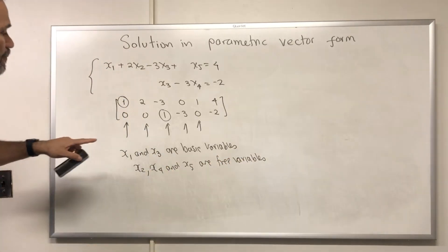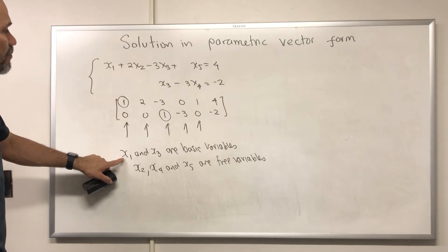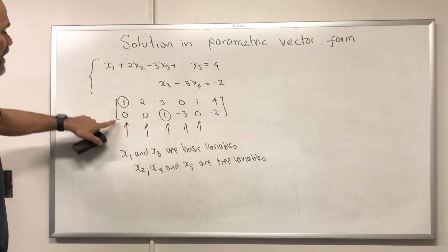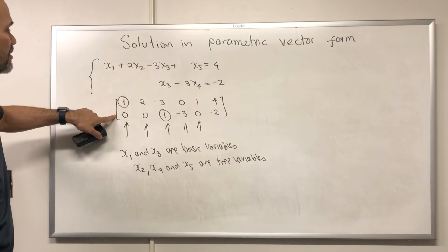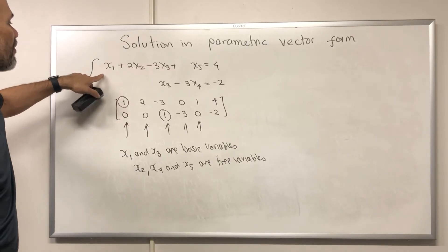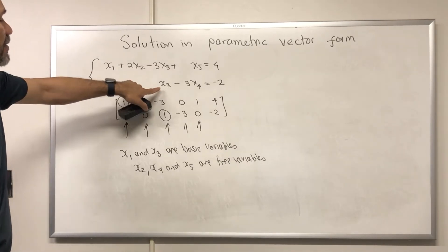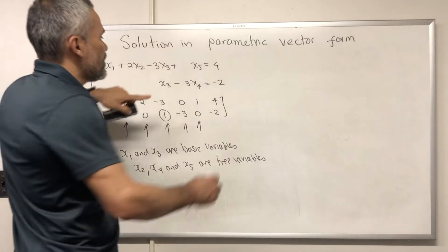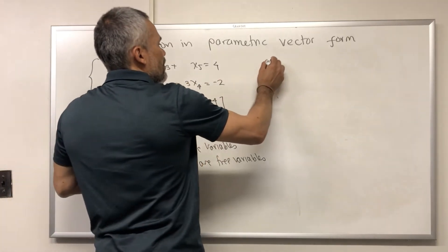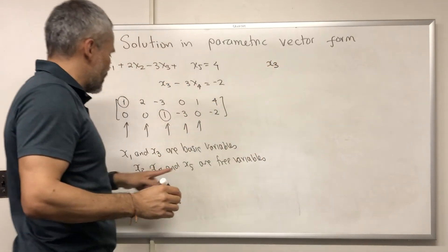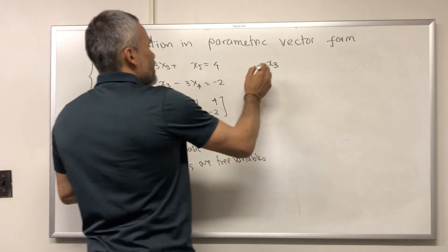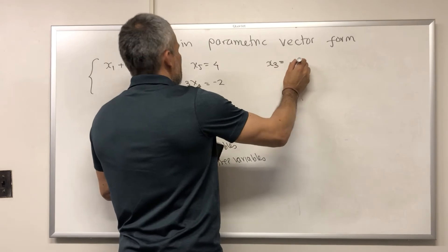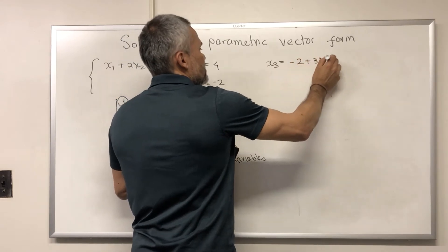Then we need to write the basic variables in terms of the free variables. And since this system is already in echelon form, then this is what I call a good system. And then we do back substitution. We solve for the basic variable x3 here in terms of the free variable x4. We have that x3 is negative 2 plus 3 times x4.